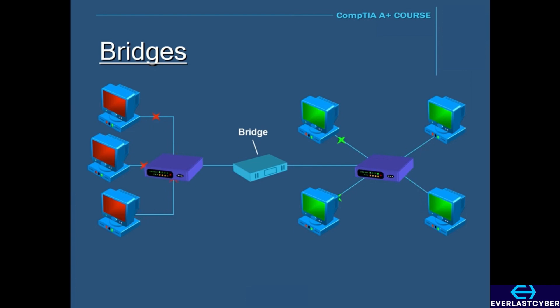Because a bridge keeps a record of all the MAC addresses of the NICs that are connected to it, it will also block all data from crossing over if it fails to meet this requirement.